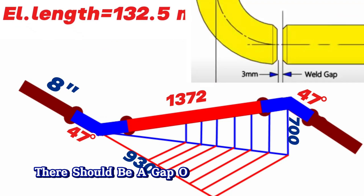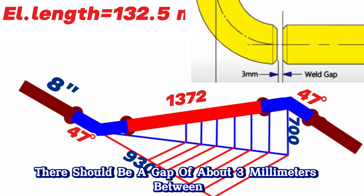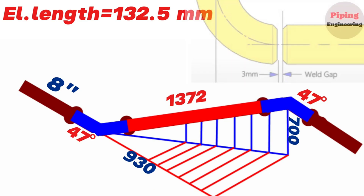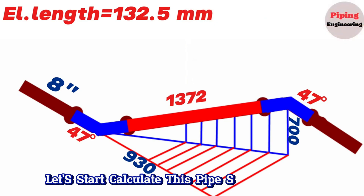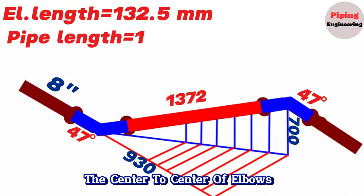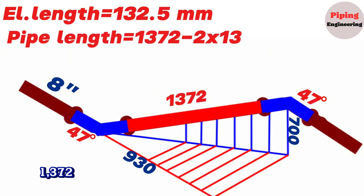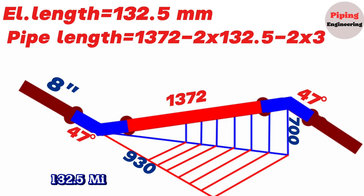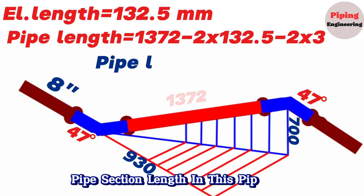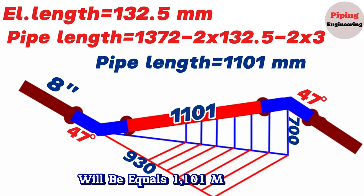Also, during fit-up there should be a gap of about 3mm between the pipe and elbows to be welded. We should take these gaps into account when calculating the length of the red color pipe section. Pipe section length equals total center-to-center length (1372mm) minus 2 times the red elbow length (132.5mm) minus 2 times the 3mm welding gap. So the red pipe section length in this pipeline equals 1101 millimeters.